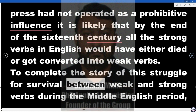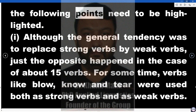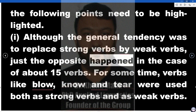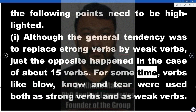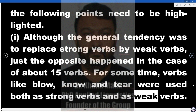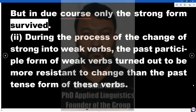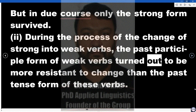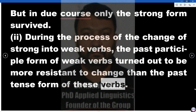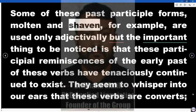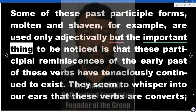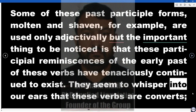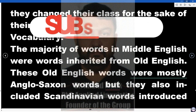To complete the story of this struggle for survival between weak and strong verbs during the Middle English period, the following points need to be highlighted. First, although the general tendency was to replace strong verbs by weak verbs, just the opposite happened in the case of about 15 verbs — verbs like 'blow', 'know' and 'tear' were used both as strong and weak verbs, but in due course only the strong form survived. Second, during the process of change from strong to weak verbs, the past participle form turned out to be more resistant to change than the past tense form. Some of these past participle forms — 'molten' and 'shaven', for example — are used only adjectivally, but these participial remnants have tenaciously continued to exist, seeming to whisper that these verbs are converts that changed their class for the sake of their survival.